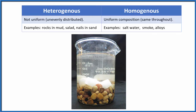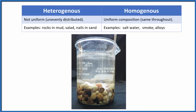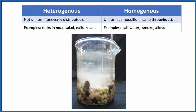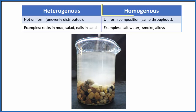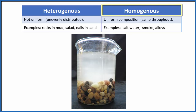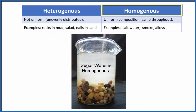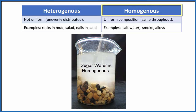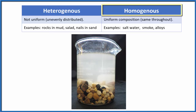But if we stirred it up, the sugar would dissolve, and then the sugar water would be homogeneous because it would be uniform in its composition, distributed evenly throughout.